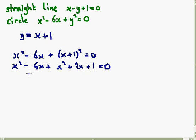So we've now got, if I group terms together, 2x squared, we've got minus 6x plus 2x is minus 4x, and I've got that plus 1 on the end.